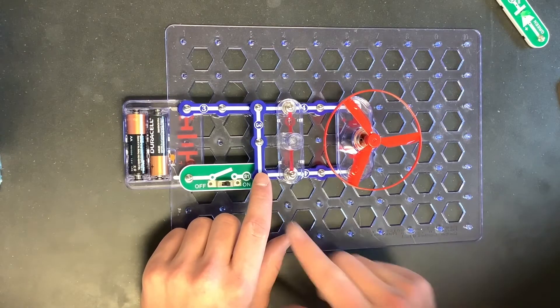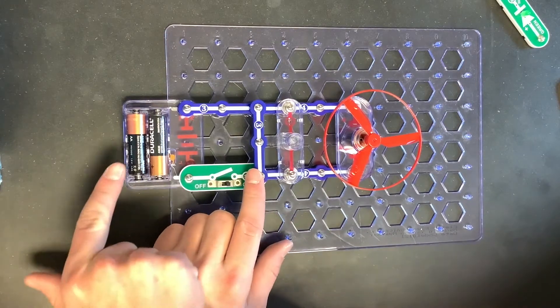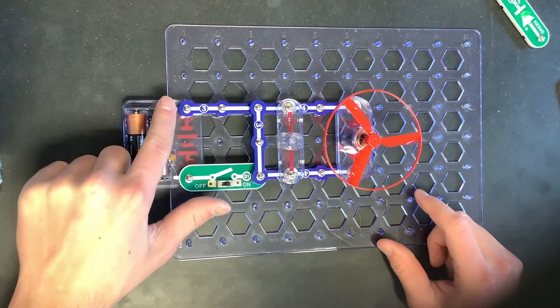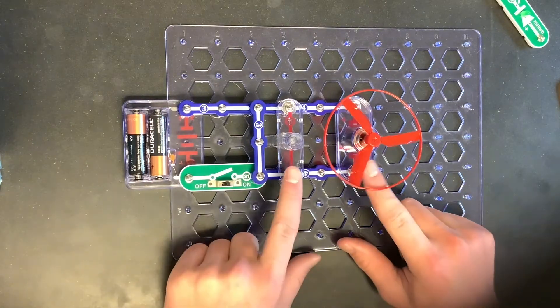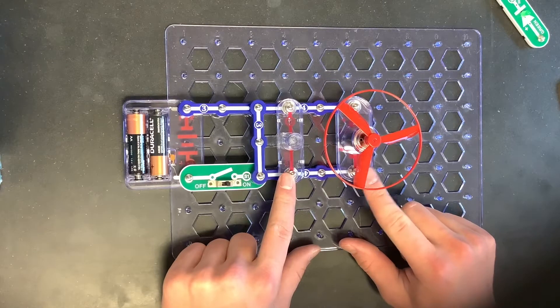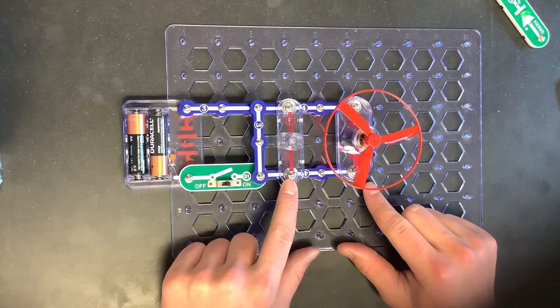But then, since it has a direct path back to the battery by going here and then here, the circuit takes that path and therefore does not run through the lamp or the motor, causing neither of them to turn on.